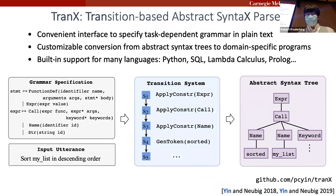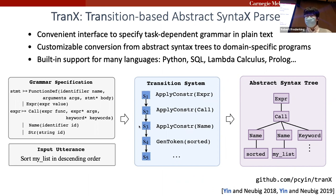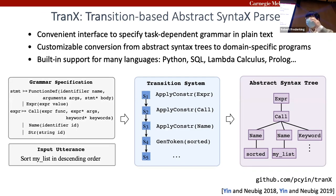This toolkit is called TRANX — a transition-based abstract syntax parser for semantic parsing. It provides convenient interfaces for users to specify task-dependent grammar in plain text using ASDL — Abstract Syntax Description Language. You can design different ASDLs for different languages. It is extensible, easy to train, and has guaranteed syntactically correct output. Eventually the ASDL is transformed into the surface form of the code, which is a deterministic process with readily available toolkits.